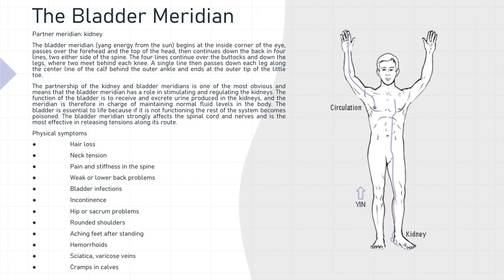The physical symptoms associated with the bladder meridian imbalance are hair loss, neck tension, pain and stiffness in the spine, weak or lower back problems, bladder infections, incontinence, hip or sacrum problems, rounded shoulders, aching feet after standing, hemorrhoids, sciatica, varicose veins, and cramps in the calves.